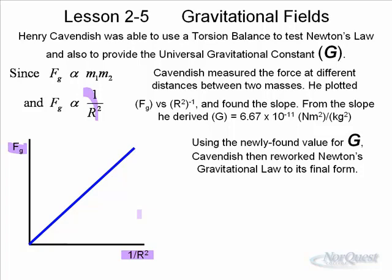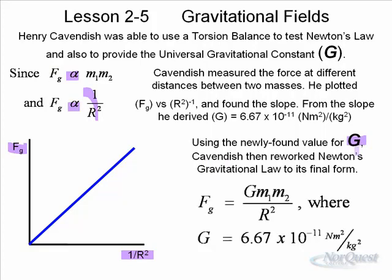This value for G is the same anywhere in the universe. Little g — 9.81 — changes as you go from planet to planet, but big G stays the same, and its value is 6.67 times 10 to the negative 11 N·m² per kg². Taking Newton's proportionalities, once you have the constant G, you can make it into an equation. Newton's equation is: the force of gravity equals G times the product of the two masses — which could be the Earth and you — divided by R squared, the distance between the two masses.